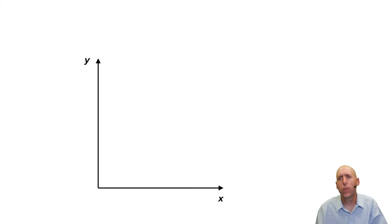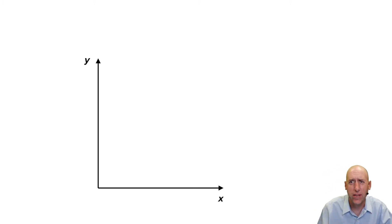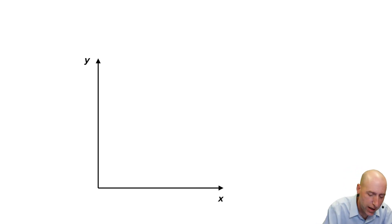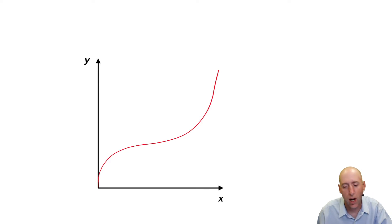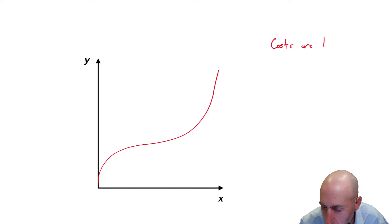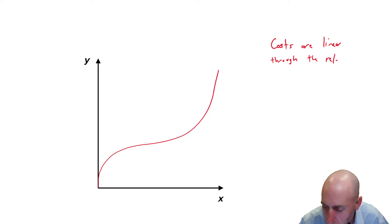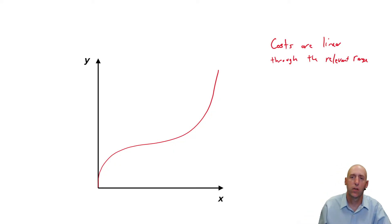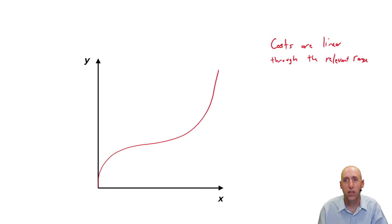To help make decisions for a company, we have to make an assumption — it's not always a perfect assumption, but it's one we have to make. Looking at one of the more complicated, curvy costs, the assumption we make in this chapter and going forward to help us make decisions is that costs are linear through the relevant range. A straight line can reasonably estimate a cost through the relevant range.